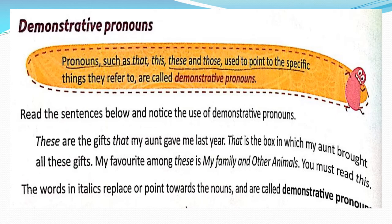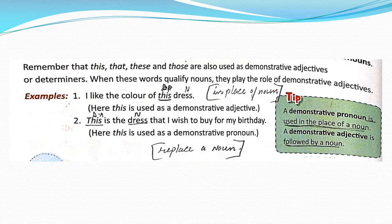When near in distance or time, we use this or these. When far in distance or time, we use that or those. There are only a few demonstrative pronouns in the English language, and there are just three simple rules for using them correctly. Remember them and you will have no difficulty using these in your own sentences.